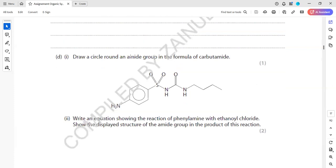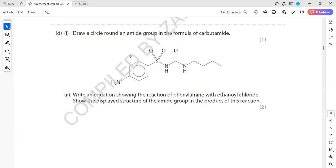Draw the circle around the amide group in the formula of carbamide. Amide. So amide is C double bonded with O and N. That is the amide or the peptide linkage. So which one is having an amide or a peptide linkage? This one is. You can match C double bonded with O and N or the other way around.